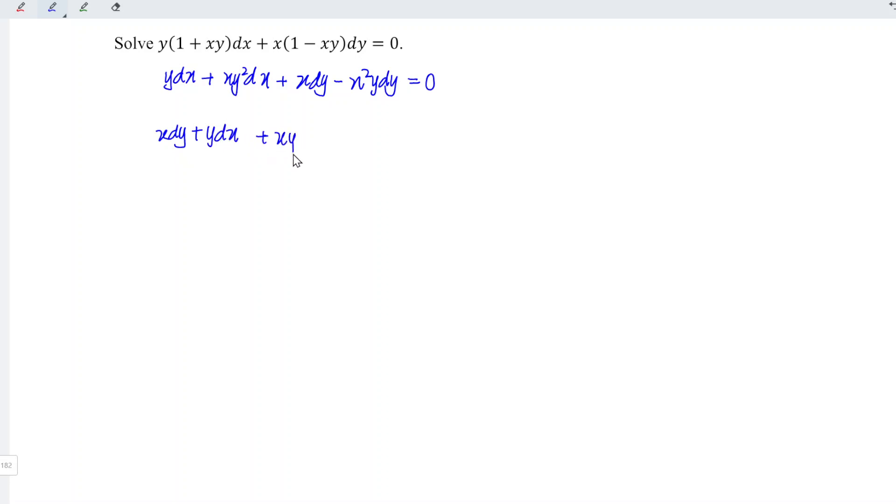We have x dy plus y dx, and the rest of the terms we write at the back. So we have xy² dx minus x²y dy, and this is equal to zero. Unfortunately, we are not able to link these two and form exact form.